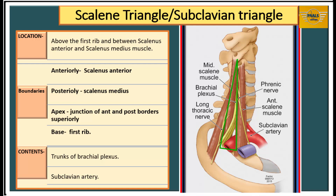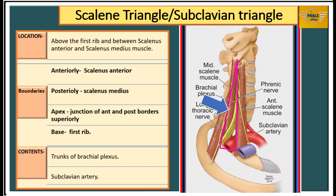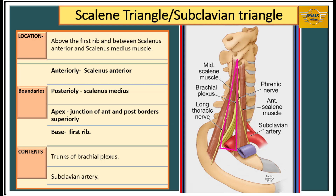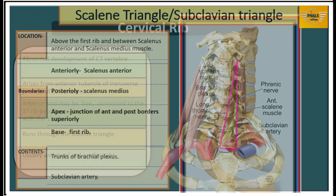One of the intermuscular spaces behind the scalenus anterior is the scalene triangle, also called the subclavian triangle. It is located between two scalene muscles: the scalenus anterior and the scalenus medius. Its boundaries are: anteriorly, the scalenus anterior; posteriorly, the scalenus medius; the apex is formed by the junction of the anterior and posterior borders superiorly; and the base is formed by the first rib. The contents are the trunks of the brachial plexus and the subclavian artery. One structure that could cause narrowing of this space and compression of its contents is the cervical rib.